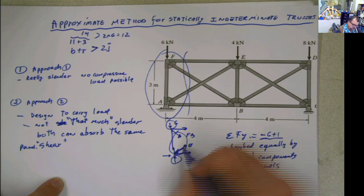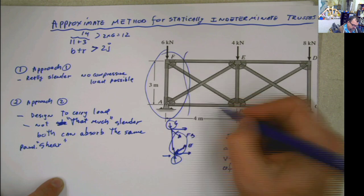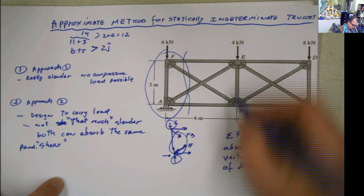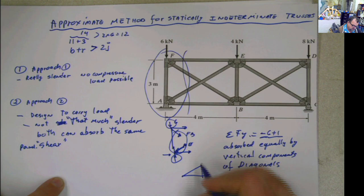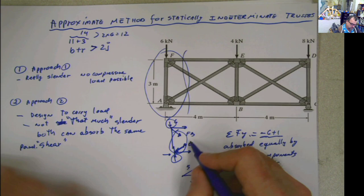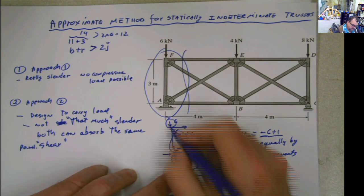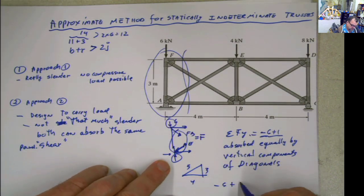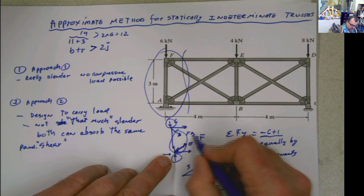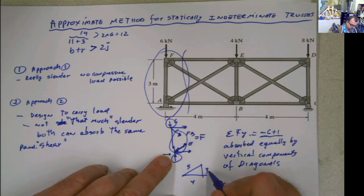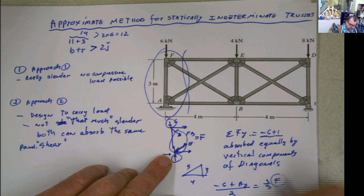So absorbed equally, or equally absorbed, by the vertical component of diagonals. And by doing that, if I know the angle, which in this case is really easy, it's 3, 4, 5, right? So you have a 3, 4, 5. You will have this 3, 4, 5 angle here. Basically, the vertical component, you can say that FB and FE, both of them, you're going to call them F. And you can say that this negative 6 plus whatever the vertical reaction AY is here, divided by 2 is going to be equal to the vertical component of this, which in this case is going to be 3 fifth of F. And then you can solve really easy, once you know for the external reaction of course.